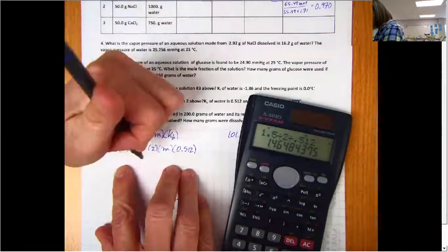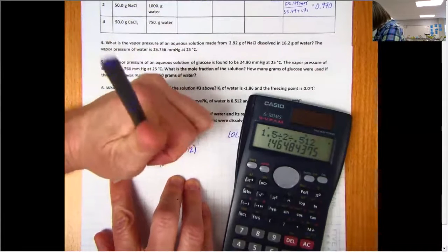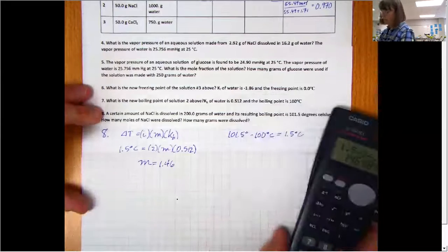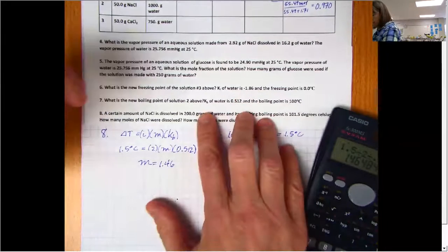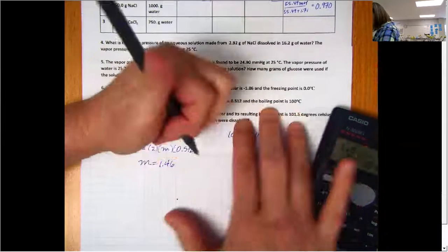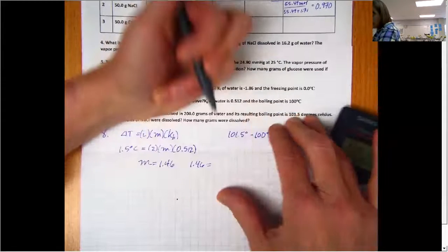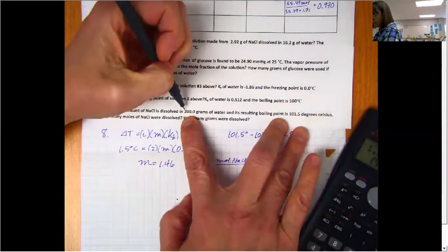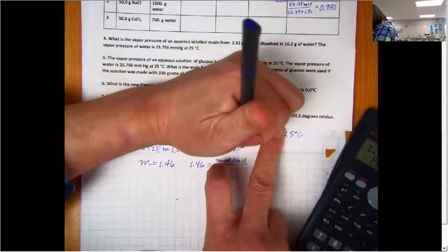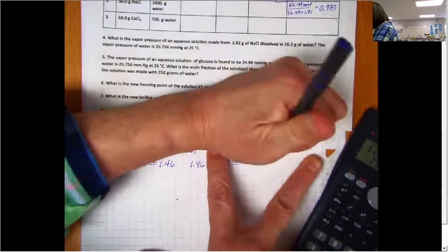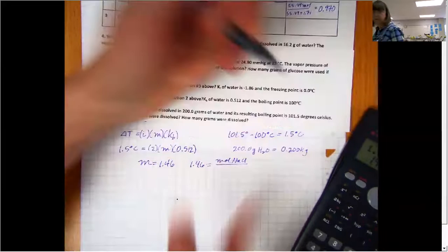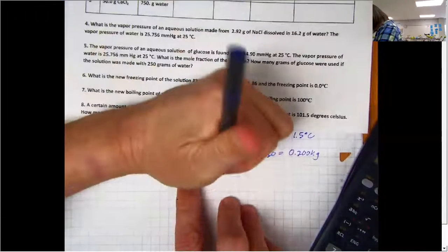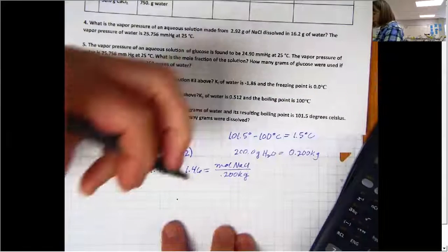So remember that molality is moles of solute per kilograms of solvent. So I can now plug in some other information. So I know that 1.46 is going to be equal to my moles of NaCl divided by my kilograms of water. So 200 grams of water would be 0.2 kilograms of water. Just move the decimal three places to the left. So that's going to go on the bottom.